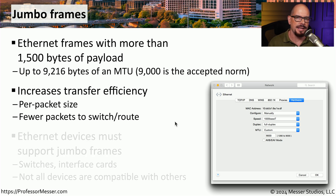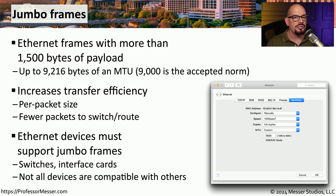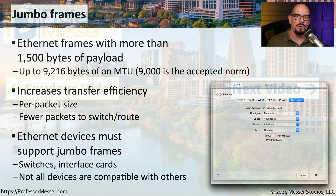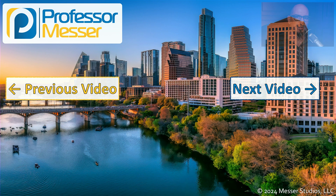The challenge, though, is that all of the devices in that communications path must understand jumbo frames. So all of your switches, all of your routers, and the other devices you're communicating with have to also be configured to use jumbo frames. If there is any device in the middle of this communication that doesn't understand jumbo frames, then they will drop these frames and you won't be able to communicate to that device at all.